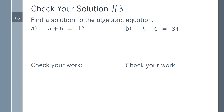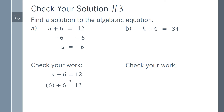To solve the equation in Part a, we will use the inverse operation to subtract 6 from both sides. This leaves us with u by itself on the left side, and we find that u equals 6. Now to check our work, we go back to the original equation, substitute 6 in for u, and we find that 6 plus 6 does equal 12. So our solution is correct.